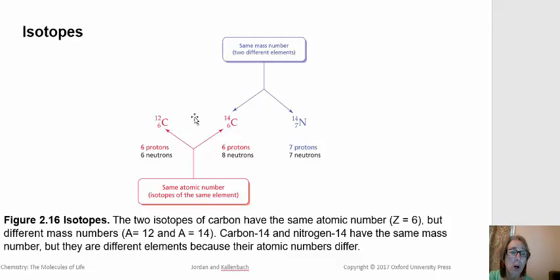So, carbon has an atomic number of six but different mass numbers. So, two isotopes of carbon include carbon-12 and carbon-14. Now, nitrogen-14, even though it has the same mass number as carbon-14, would not be an isotope of carbon because it's a different element. So, when we talk about isotopes, we're referring to the same element but just a different number of neutrons.